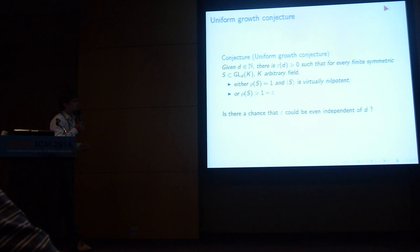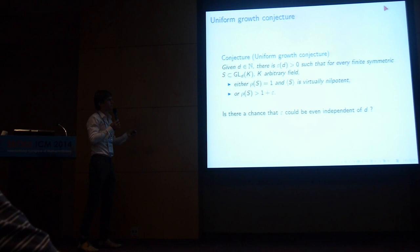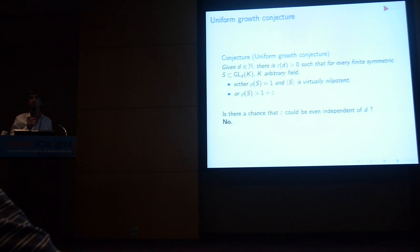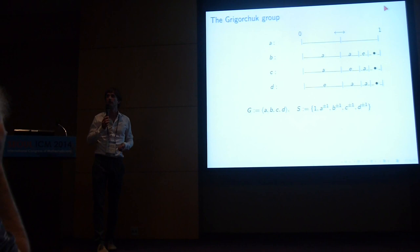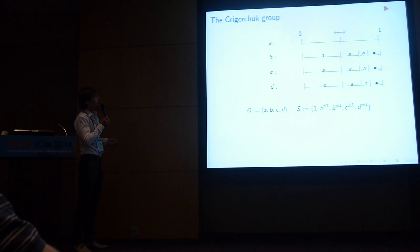Is there a chance that epsilon could be completely independent of d? The answer is no, and the reason is the Grigorchuk group. Famously, Grigorchuk in the early 1980s gave an example of a group with intermediate growth — it is not virtually nilpotent, so it does not grow polynomially, but yet the growth is not exponential.